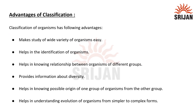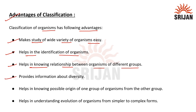Moving towards the advantages of classification. Classification of organisms has the following advantages. First, it makes the study of a wide variety of organisms easy. Second, it helps in the identification of organisms. Third, it helps in knowing the relation between organisms of different groups. Fourth, it provides information about diversity.